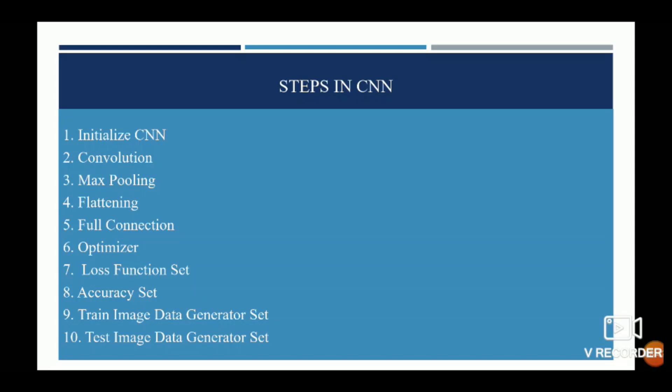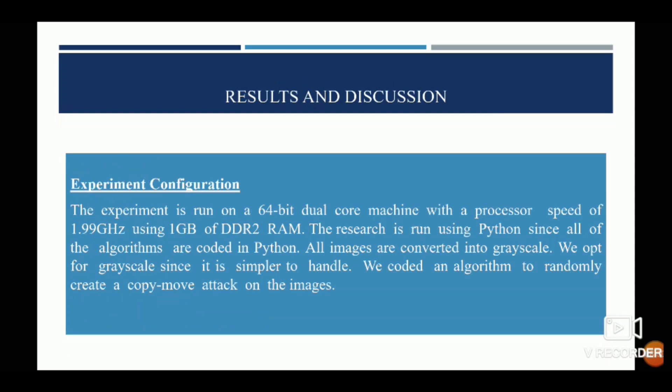The optimizer used after full connection is used to change certain attributes such as weights and learning rate, and to reduce losses. The experiment configuration: the experiment is run on a 64-bit dual-core machine with a processor speed of 1.99 GHz.